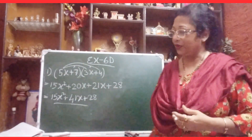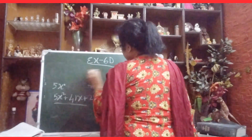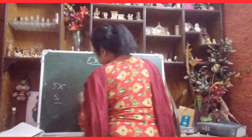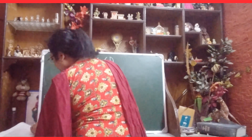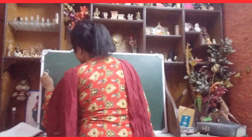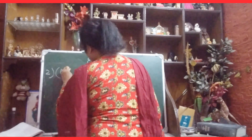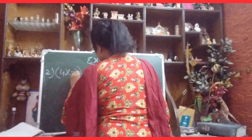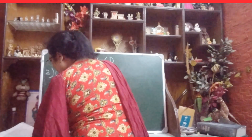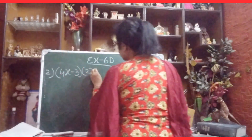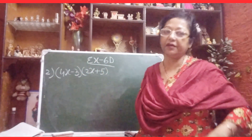Now let us do the next one. The next sum gives us 4x minus 3 and 2x plus 5. Here you see one minus sign is given, so pay attention to what will happen with the minus sign.